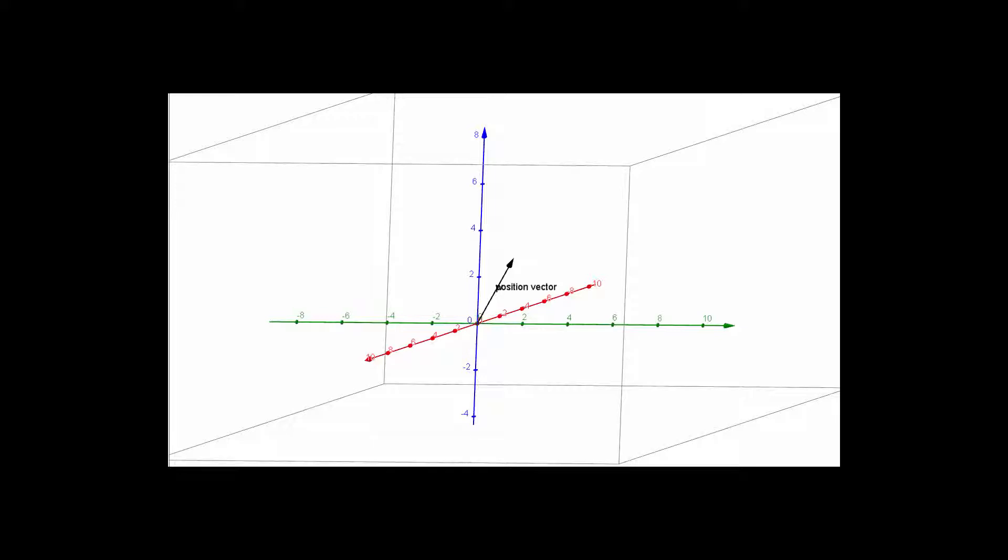So there's our position vector, it's a W. Here's our first direction vector, U. Here's our second direction vector, V.